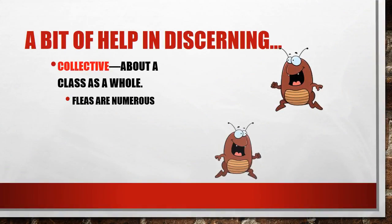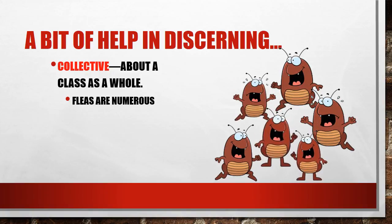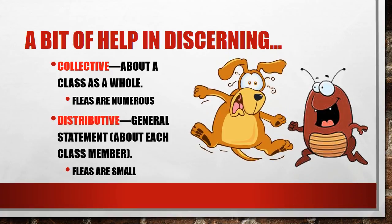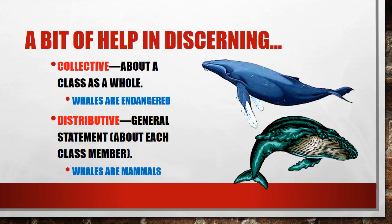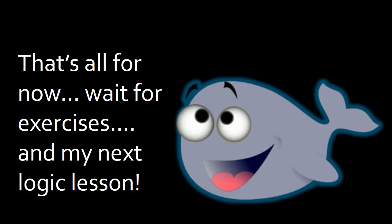A little help in discerning these fallacies: you need to know the difference between talking about a class as a whole — like fleas are numerous — and talking about them distributively, like fleas are small, meaning each member of the class. Whales are endangered doesn't mean each and every member of the class is endangered — it's a statement about the class as a whole. But whales are mammals is a case of distributive reference, since each individual whale is definitely a mammal. Just memorize your composition and division fallacies and the other fallacies in this lesson, and we'll see you next time for our lessons in deductive logic. Thanks for hanging around.